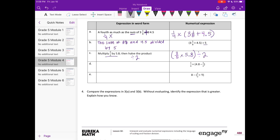D, we have 1 6th times 4 and 8 10ths minus 1 half. I'm going to start with the 1 6th, so we have 1 6th as much as, and I'm going to say the difference, difference because we're subtracting between 4 and 8 10ths and 1 half.